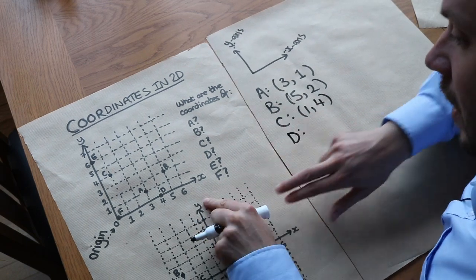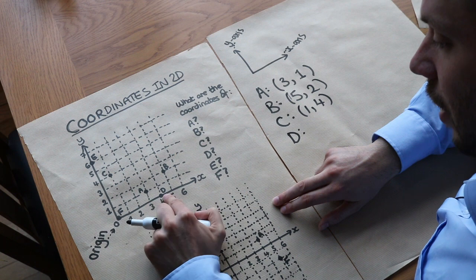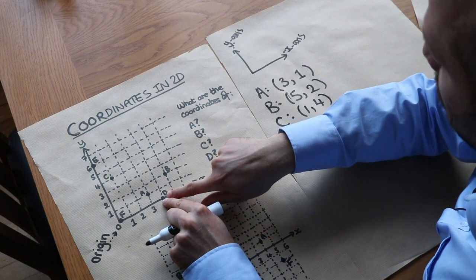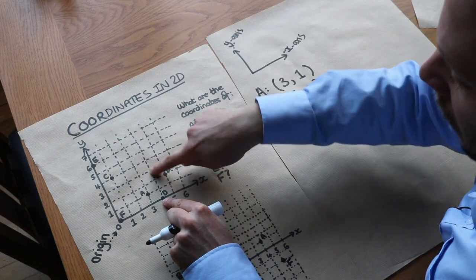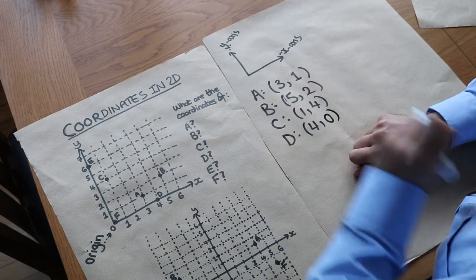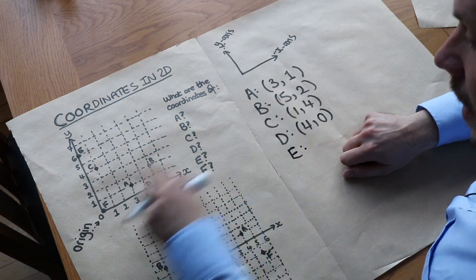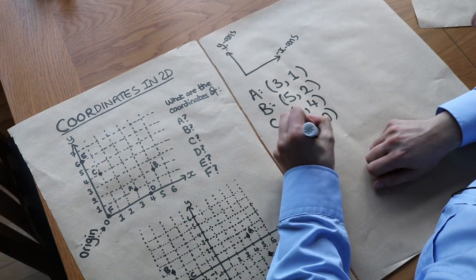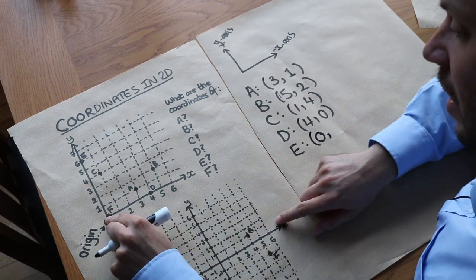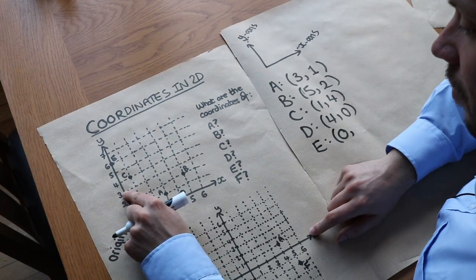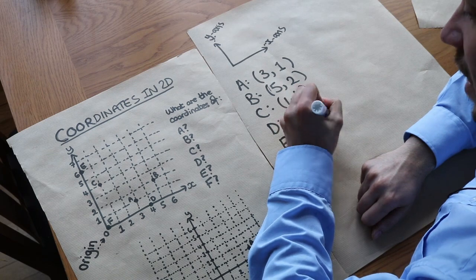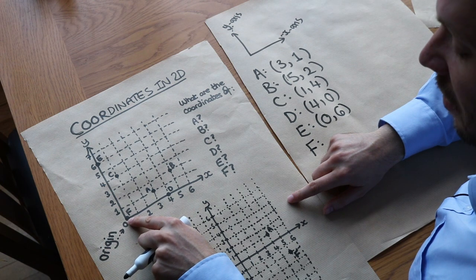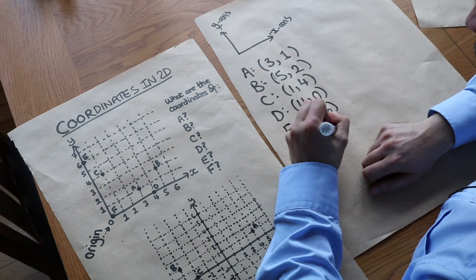Then we've got D. First in the x-direction we go four across, and we don't have to move in the y-direction at all — we're already there, so we move zero positions up. That's (4, 0). And then E: to get to E, we don't move horizontally at all, so zero in the x-direction, but we do have to move up six positions in the y-direction. So E is (0, 6). Finally, F: we don't have to move in the x or y-direction at all — we're staying at the origin, so that's (0, 0).